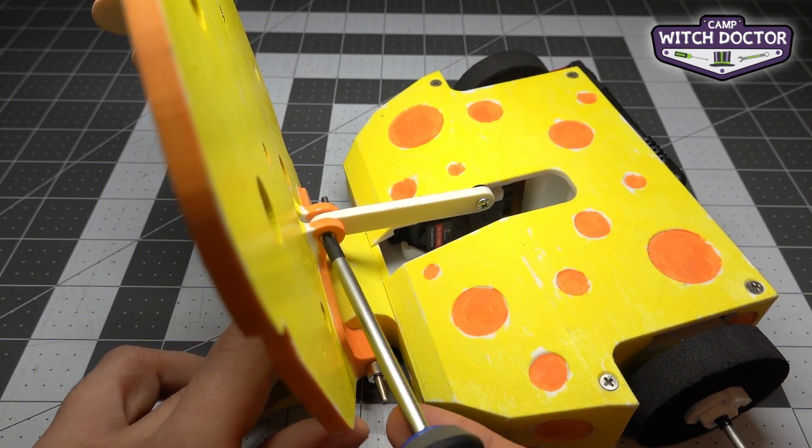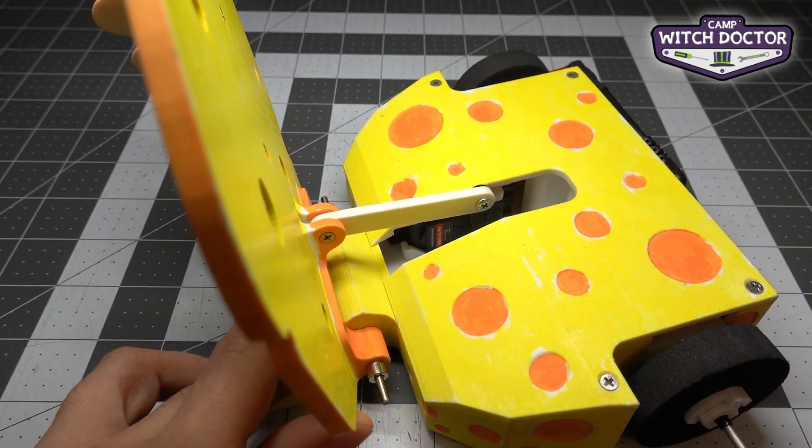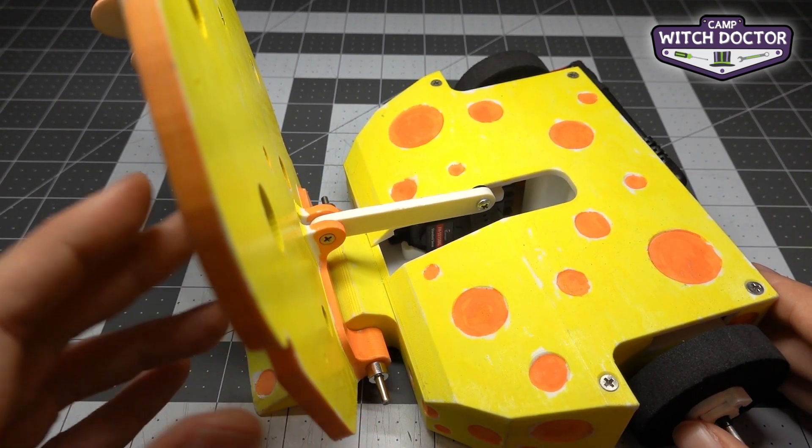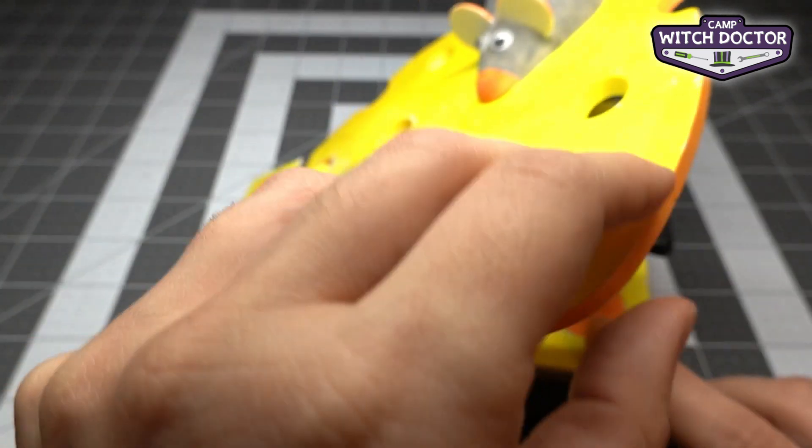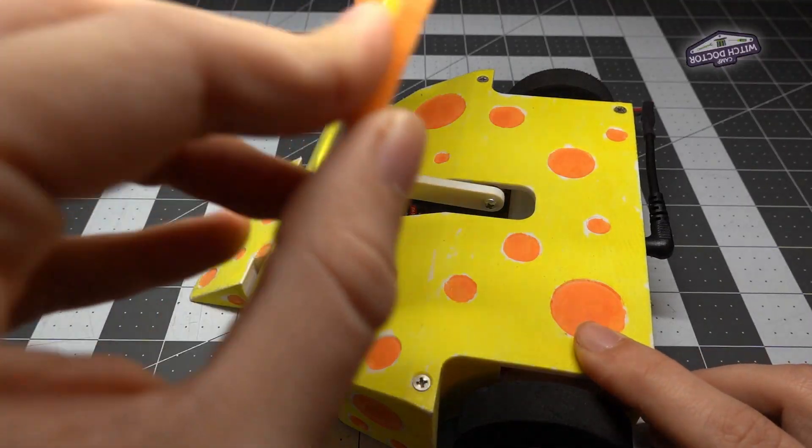So it doesn't need to be super tight, just as soon as you feel it's a little bit harder to put in you can go ahead and stop there. All right, so now you can see when you push it forward and back you can hear that servo moving.